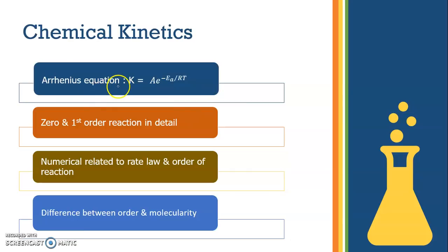Coming to chemical kinetics, important topics are Arrhenius equation, zero and first order reaction in detail. Numerical related to rate law, order of reaction. First order reaction you have to calculate T half - they may give you T₅₀, T₇₅, T₈₀, like that. You have to do the calculation. Then we have difference between order and molecularity. This question comes for one mark students. Please don't leave this question. It's a simple question. Understand it and learn it.